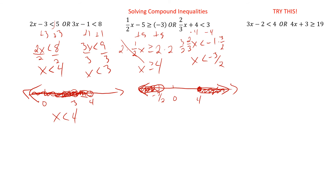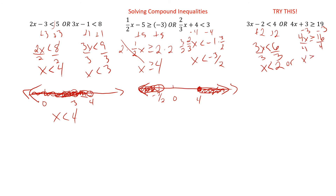How do you think you did? Let's take a look. For the first one, let's add two to both sides, so we have three x is less than six, divide by three, x is less than two. Or, this one we can subtract three, so we have four x is greater than or equal to 16, divide by four, x is greater than or equal to four. So you have less than two, or greater than or equal to four. We can graph this — we've got zero, two, four. Less than two is going to be an open circle going this way. Greater than or equal to four is going to be a closed circle going that way.